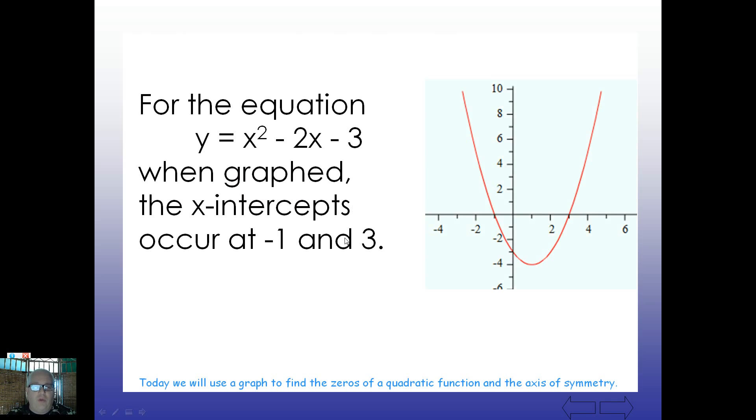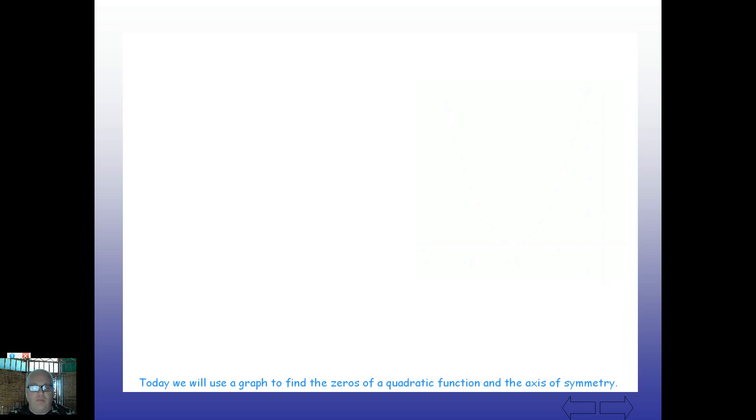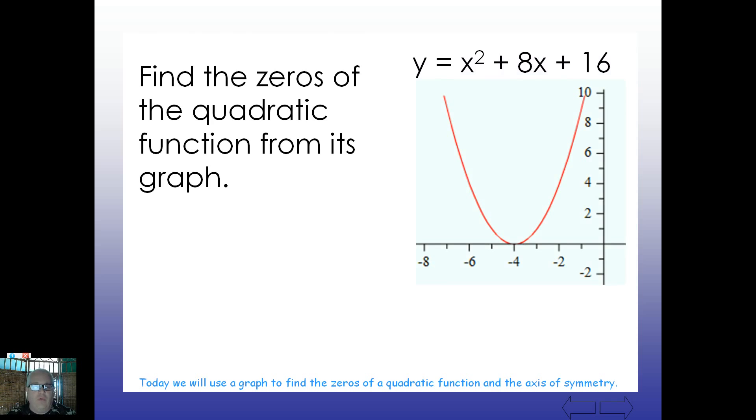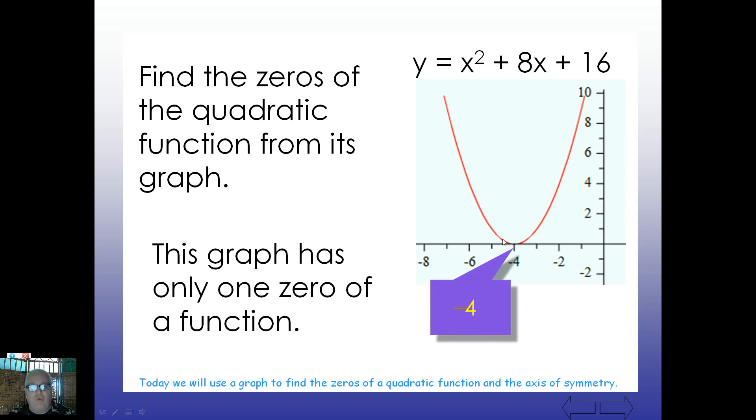For this equation, when graphed, the x-intercepts occur at negative one and three. So if we were to graph this in a graphing calculator, or even the old-fashioned way, longhand, then we would find that we have two x-intercepts at negative one and three. Here's one where if we find the zeros of the function, we're going to end up showing that it only touches in one spot, negative four.